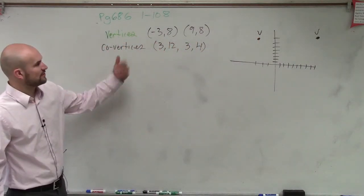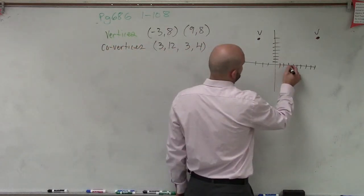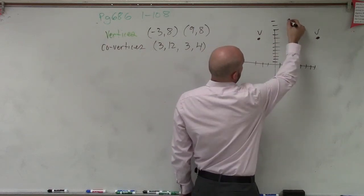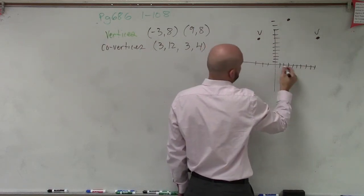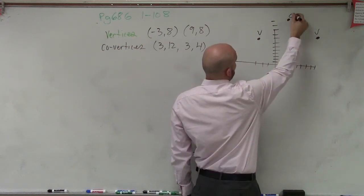Then I found my two co-vertices, which is at 3, 12, and 3, 4. So 1, 2, 3, 12, so that was 8, 9, 10, 11, 12. And then at 3, 4, 1, 2, 3, 1, 2, 3, 4. So those are my co-vertices.